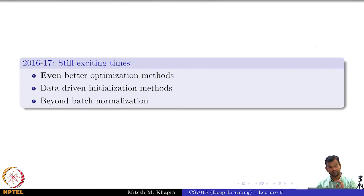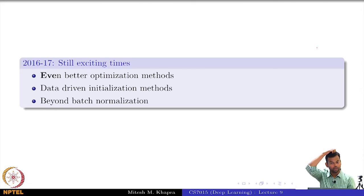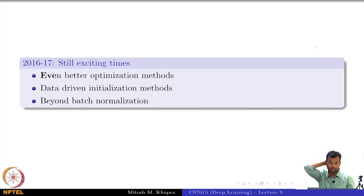The past couple of lectures have been about tips and tricks for deep neural networks. From here on, in the next lecture, we will move on to word representations — essentially seeing an application of feed-forward neural networks — and from there on we will move to convolutional networks.